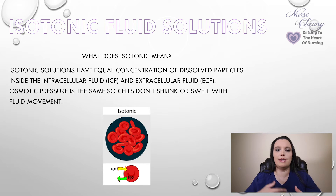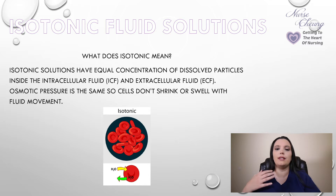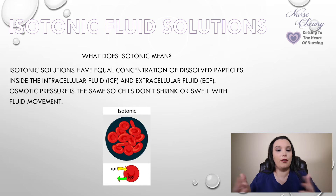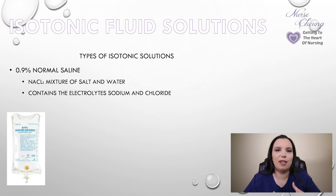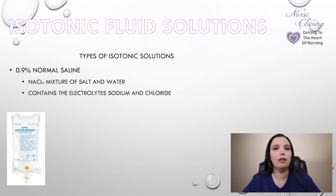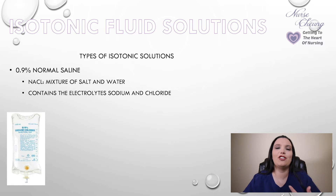Isotonic solutions have an equal concentration of dissolved particles within the intracellular fluid as well as the extracellular fluid outside the cell. Osmotic pressure is the same either way, and cells don't shrink or swell when fluid moves between them. One type of isotonic solution is normal saline — hence the word 'normal.' 0.9% normal saline is a mixture of salt and water, and it also contains electrolytes: sodium and chloride.